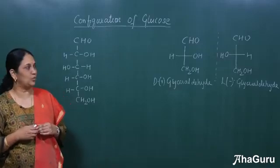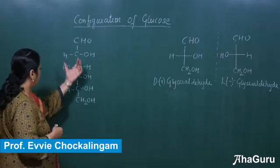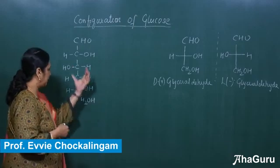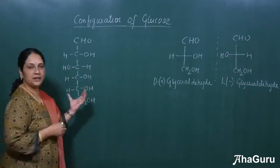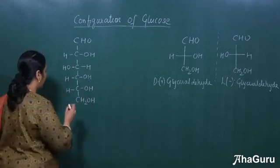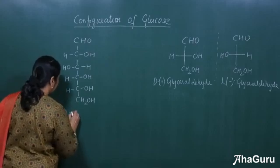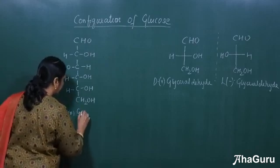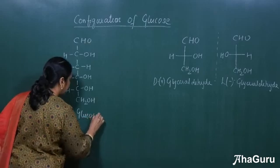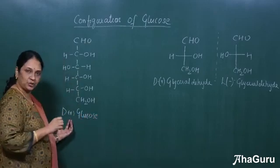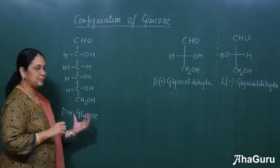Let us see the structure of glucose now. I have written the structure of glucose. Usually when we write glucose, we always write it as D plus glucose. Now this has nothing to do with dextrorotatory, okay. So now I'll explain that.